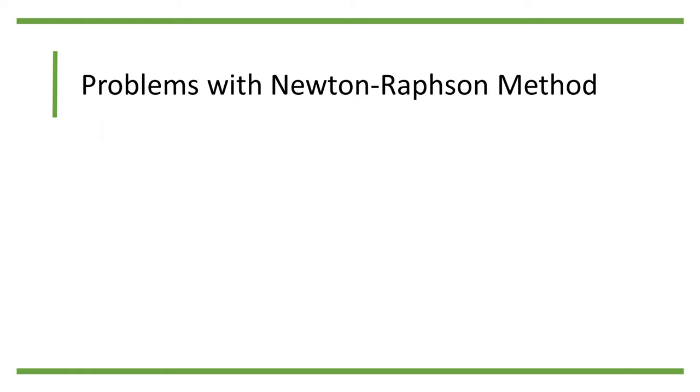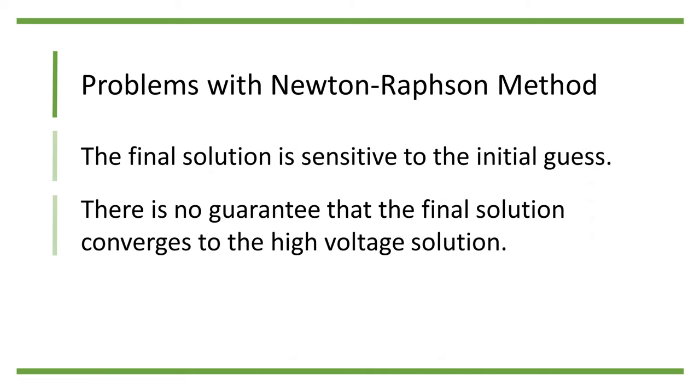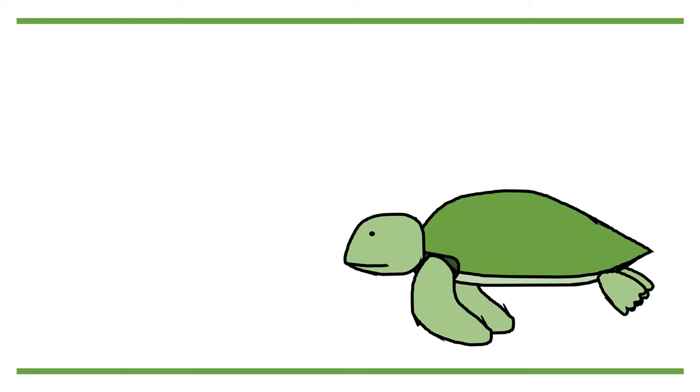So what are the problems when using Newton-Raphson method? The first is that the final solution is sensitive to the initial guess. Therefore, there is no guarantee that the final solution converges to the high voltage solution we want. Also, for each iteration, the Jacobian matrix and its inverse must be recalculated again. This increases the computational burden of the method. In the next videos, we will discuss methods that deal with these shortcomings.